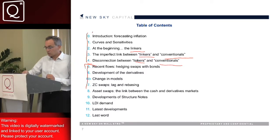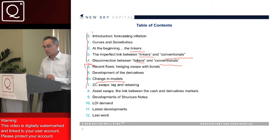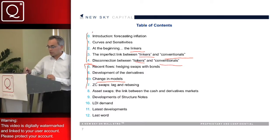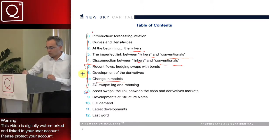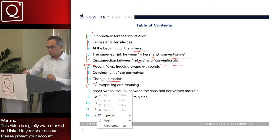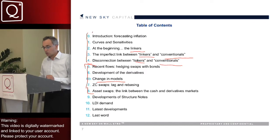Then we're going to see what the impact has been on the modeling of inflation products. We're going to see the different models and focus mainly on the Jarrow-Yildirim models. And then finally, look at the connection between bonds, inflation-linked bonds, and swaps via the asset swaps.